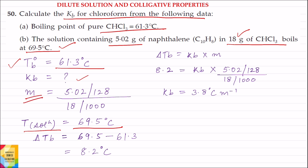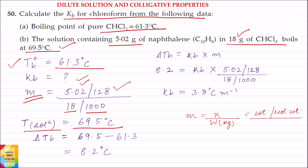So molality of solution can be calculated. Molality is equal to moles of solute divided by weight of solvent in kg. Moles of solute equals weight of solute — given as 5.02 gram — divided by molecular weight of solute. Molecular weight of naphthalene is 128 gram per mole, divided by weight of solvent in kg, i.e., 18 gram divided by 1000.